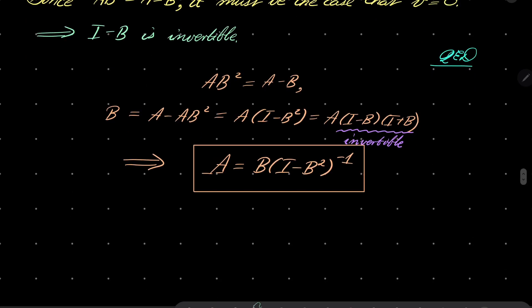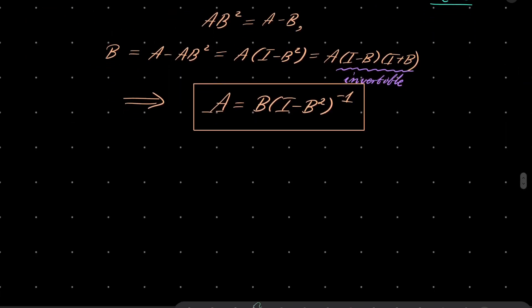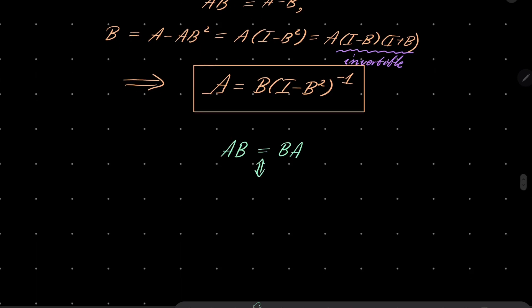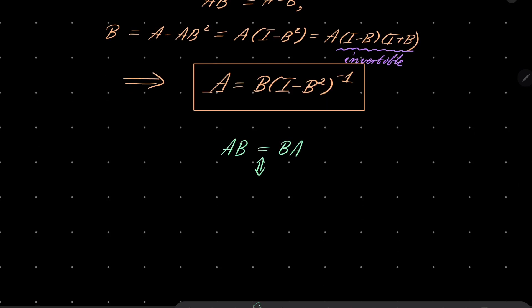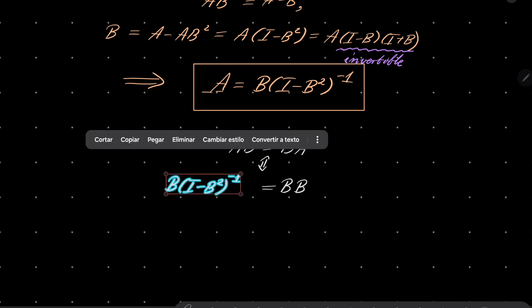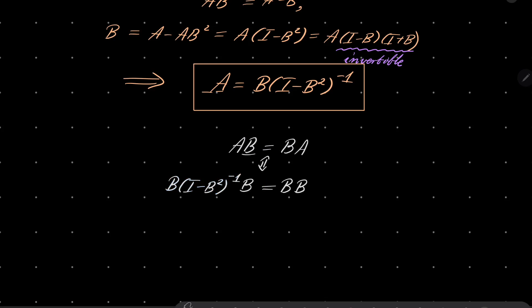Now, I will show that AB equals BA. I will do it by the following chain of implications. Notice that AB equals BA. This is equivalent to saying, we know that A is B times that. So it's equivalent. AB equals BA. It's equivalent to saying that B, I minus B squared inverse B equals B, B, I minus B squared inverse.